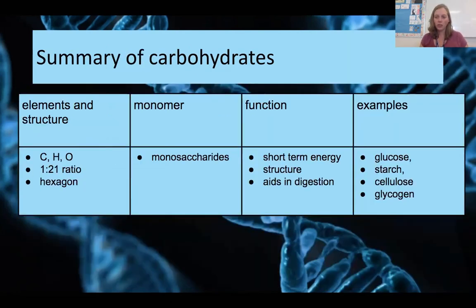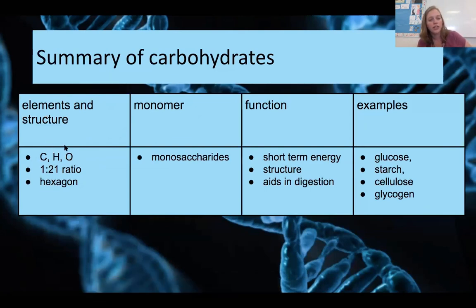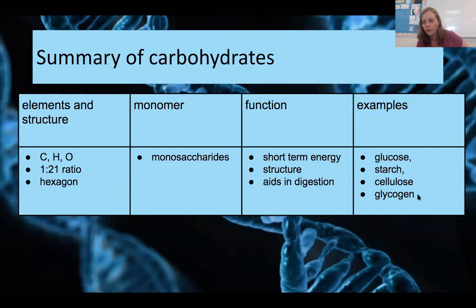Quick summary of carbohydrates: Elements and structure — CH2O in a one-to-two-to-one ratio, generally giving a hexagon shape. The monomer is monosaccharides — one sugar. Main functions are short-term energy and structure, and cellulose aids in digestion. Four main examples: glucose (short-term energy from photosynthesis), starch (how plants store sugar), cellulose (makes up plant cell walls), and glycogen (how animals store sugar).